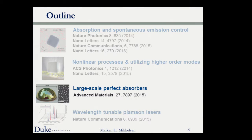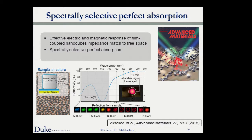While the previous work focused on single nanoparticles, using colloidal synthesis and self-assembly techniques makes scaling to larger areas very straightforward. For large-scale perfect absorbers, we use the same structure but without emitters, placing nanocubes at relatively high density on our substrate. This allows us to control the effective electromagnetic response of these surfaces and impedance-match to free space, achieving perfect absorption at specific wavelengths.